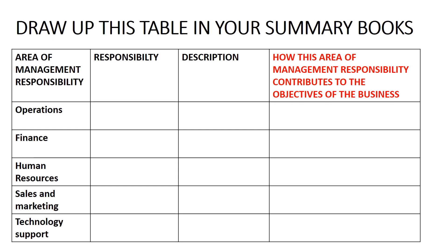The best way of remembering the content of this video is to draw up a table like the one on this slide. Down the left-hand side are the five areas of management responsibility: operations, finance, human resources, sales and marketing, and technology support. In the next column, outline what each area is responsible for. In the third column, describe what each area does. And in the fourth column, explain how each area contributes to the business's objectives. Please include this table in your summary book — the remainder of this video will provide the information you need to fill it out.